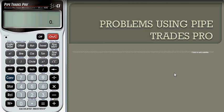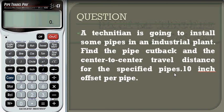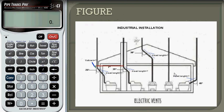Let's see problems based on using a pipe trades pro. A technician is going to install some pipes in an industrial plant. Find the pipe cut back and the center-to-center travel distance for the specified pipes shown in the figure. We need to find cut back for an offset having a 20-degree bend angle, and find travel lengths for offsets having bend angles of 25, 35, 38, and 45 degrees.